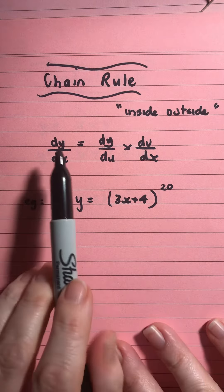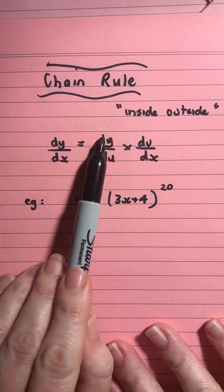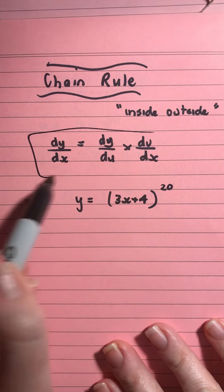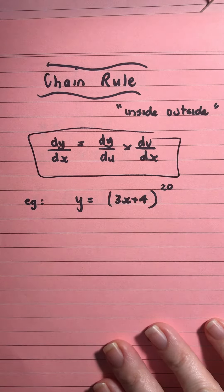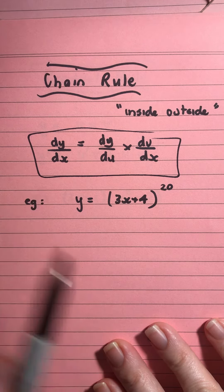So, first step, well, looking at our rule here, we've got dy on dx is equal to dy on du times du on dx. So, that's your chain rule. And you'll see that in various forms on your formula sheet, etc. But I like this form and I tend to go with that.